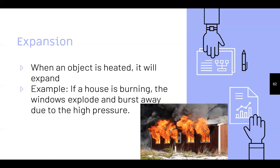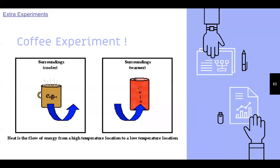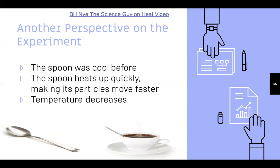A coffee experiment: we know that heat is the flow of energy from a high-temperature location to a low-temperature location. When we put coffee in a cup and set it on the table, stirring it around can make it cooler. Same with a cold drink — putting water in transfers cooler and warmer energy between substances.